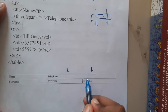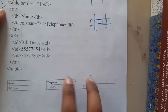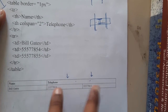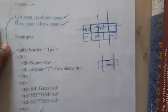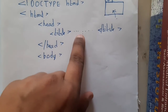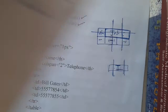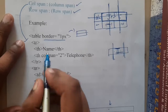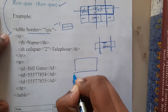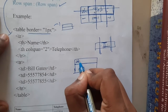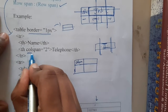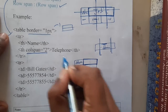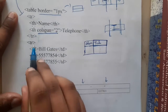Remember: colspan means you are combining two column cells into one. In the colspan example the table has 'Name' and 'Telephone' as headings, with 'Bill Gates' and two phone numbers as data. You start with table border one pixel. In the first row you write th for 'Name', then th with colspan="2" for 'Telephone', which combines the two column cells into one. In the second row you write td for 'Bill Gates', then two separate td tags for each phone number.